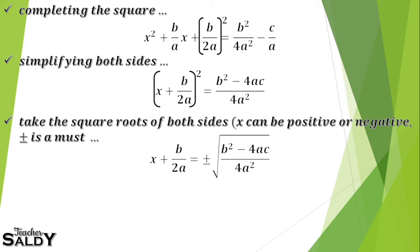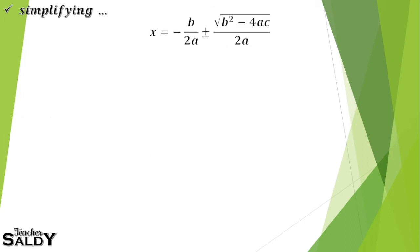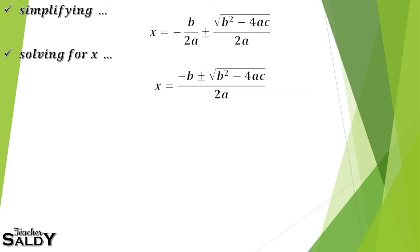Take the square roots of both sides. Since x can be positive or negative, we get a plus or minus. We transpose b/2a, giving us -b/2a ± √(b² - 4ac) all over 2a, since the square root of 4 is 2 and the square root of a² is a. Since both terms share the denominator 2a, we combine them: x = (-b ± √(b² - 4ac)) / 2a.